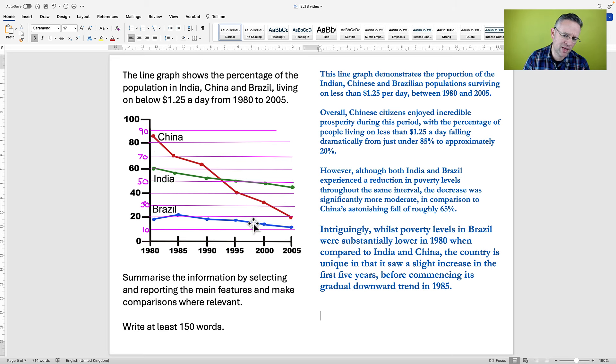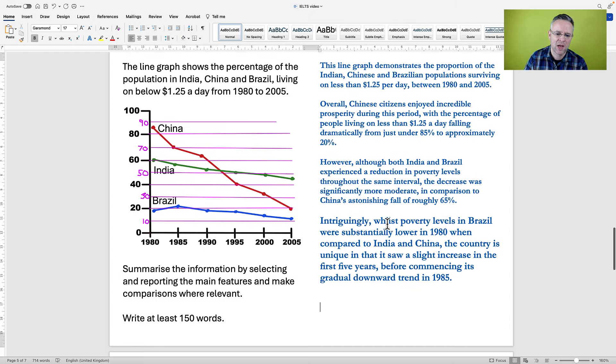So we've commented on China's dramatic fall. We've commented that India and Brazil, whilst they have fallen, they are not as dramatic as China. So the next thing that I noticed, the main feature, was if we look at Brazil, Brazil, actually, the levels of poverty arise. So more people are poor in 1985 than in 1980. So something must have happened to the economy of Brazil in that time. However, China falls and India falls completely. So I'm going to comment on this and I've used this adverb intriguingly. Intriguingly is a very fancy way of saying interestingly. Intriguingly, whilst poverty levels in Brazil were substantially lower in 1980 when compared to India and China. So yes, definitely lower. The country, that means Brazil, is unique in that it saw a slight increase in the first five years. Before commencing its gradual downward trend in 1985.